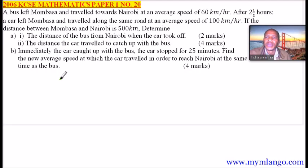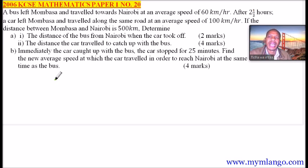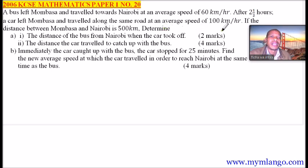This is question number 20, 2006 KCSE Mathematics Paper 1. We are told a bus left Mombasa and travelled towards Nairobi at an average speed of 60 km per hour. After two and a half hours, a car left Mombasa and travelled along the same road at an average speed of 100 km per hour. The distance between Mombasa and Nairobi is 500 km.